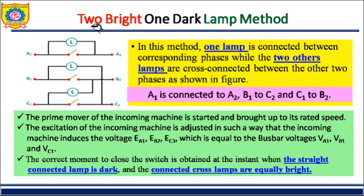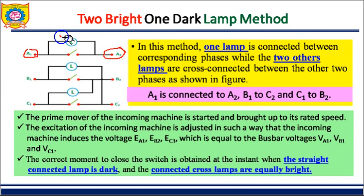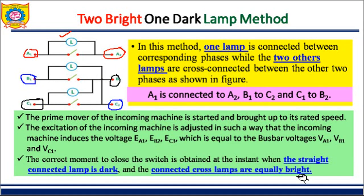Next is the two bright and one dark lamp method — a combination of both previous methods. Previously we had the dark lamp method, then the three bright lamp method, and now the two bright one dark. In this method, A1 and A2 carry their own straight-connected lamp, but B1 is connected to C2 and B2 is connected to C1, making the other two lamps cross-connected.